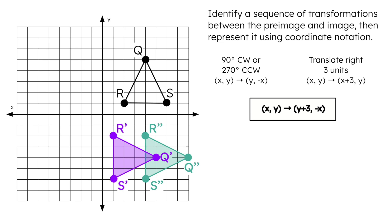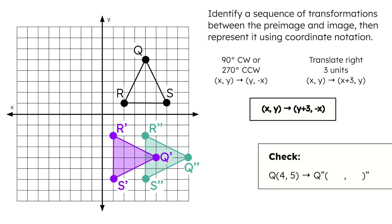Let's check whether our coordinate notation is correct by applying it to point Q at (4, 5). We switch 4 and 5, change the sign of 4 to negative 4, and add 3 to 5. This gives us Q'' at (8, −4), which matches the coordinates of Q''. Nice!